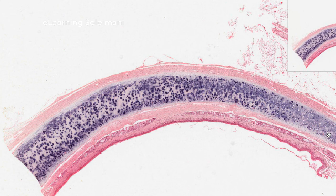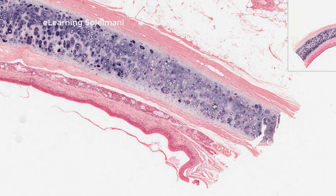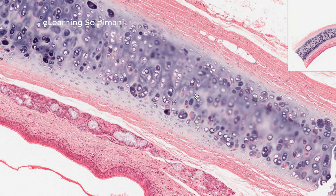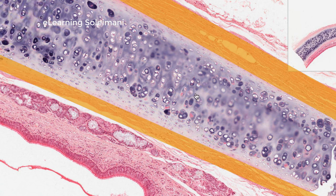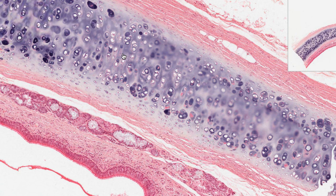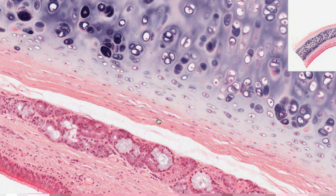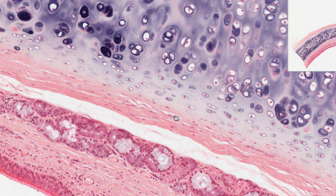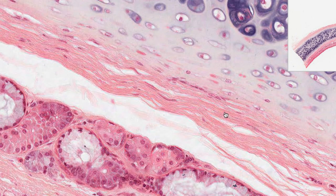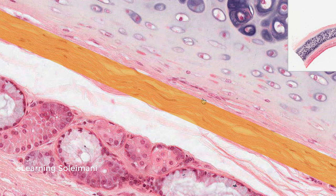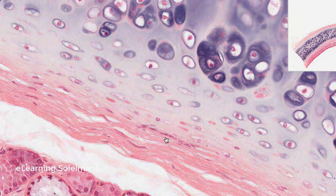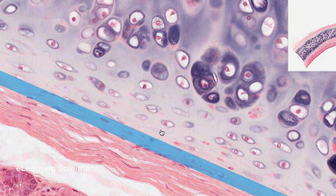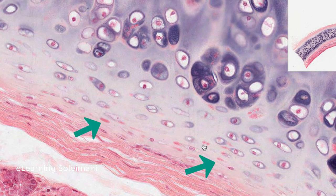This slide shows the trachea, used here to teach hyaline cartilage. With higher magnification you can see the cartilage. The perichondrium is a layer of dense irregular connective tissue that surrounds the surface of hyaline cartilage, and it is made up of two layers: an outer fibrous layer containing fibroblasts and collagen fibers, and an inner chondrogenic layer containing chondroprogenitor cells.